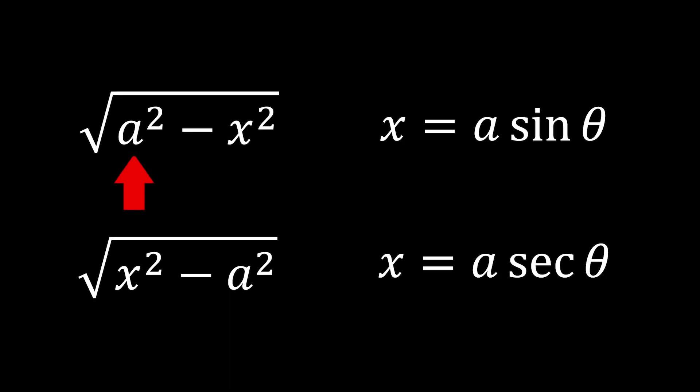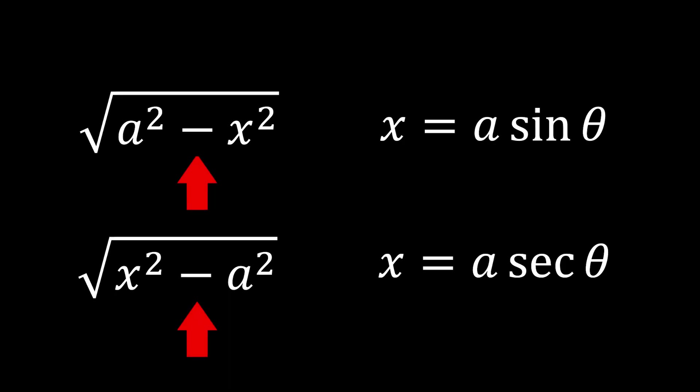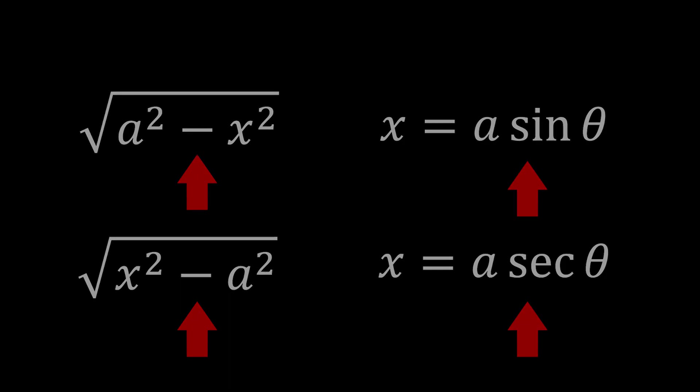When a constant squared appears in front, you can substitute x with sine theta. However, there is no need to memorize this rule specifically. Just remember the fact that when there is a minus sign, you can choose between sine theta or secant theta for substitution.